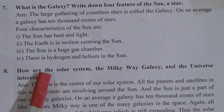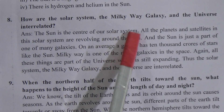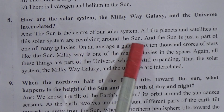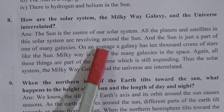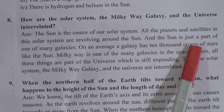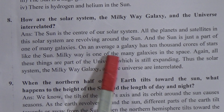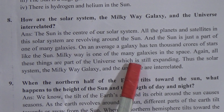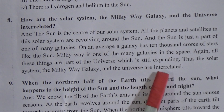Come to question number 8: how are the solar system, the Milky Way galaxy, and the universe interrelated? The answer is: the sun is the center of our solar system, and the planets and satellites in this solar system are revolving around the sun. The sun is just a part of one of the many galaxies. On an average, a galaxy has 10,000 crores of stars. And like the sun, the Milky Way is one of many galaxies in space. All these things are part of the universe, which is still expanding. Thus the solar system, the Milky Way galaxy, and the universe are interrelated.